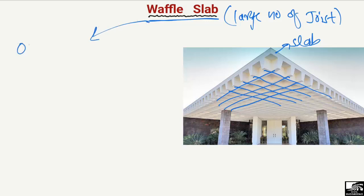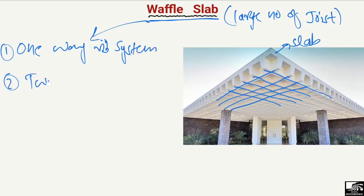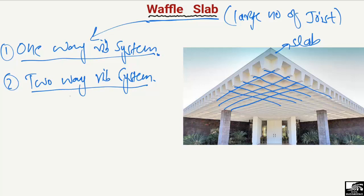The waffle slab has two further subtypes: the one-way rib system and the two-way rib system. In the one-way rib system, ribs are provided only in one direction. When ribs are provided in both directions, it is known as the two-way rib system. Hope you guys understand — don't forget to subscribe to our channel for daily civil engineering videos. Thank you for watching.